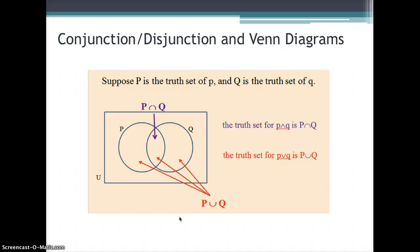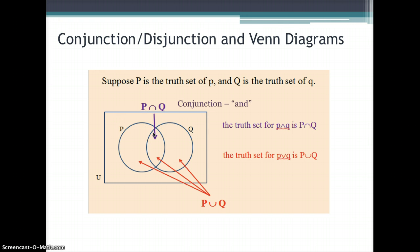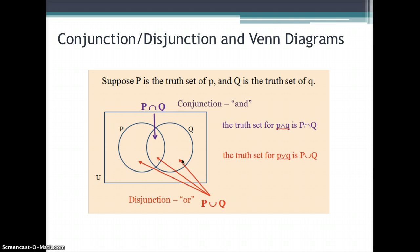Looking at the Venn diagram: the intersection portion of P and Q represents the conjunction, or 'and.' The parts of P and Q outside the intersection represent the disjunction, or 'or.'